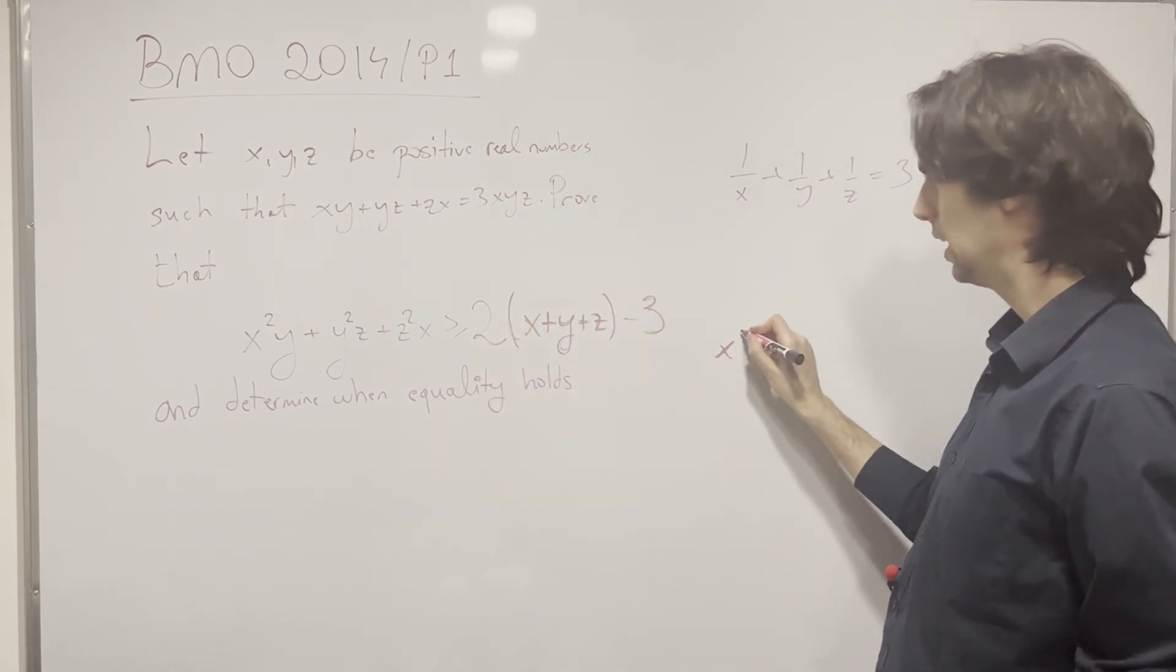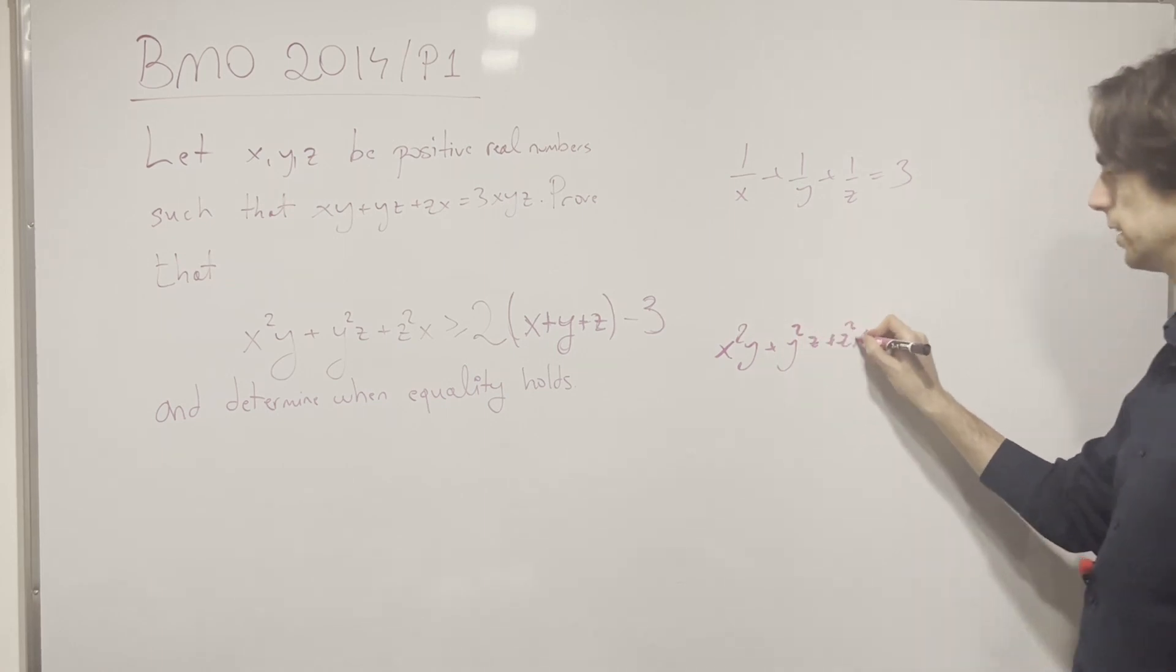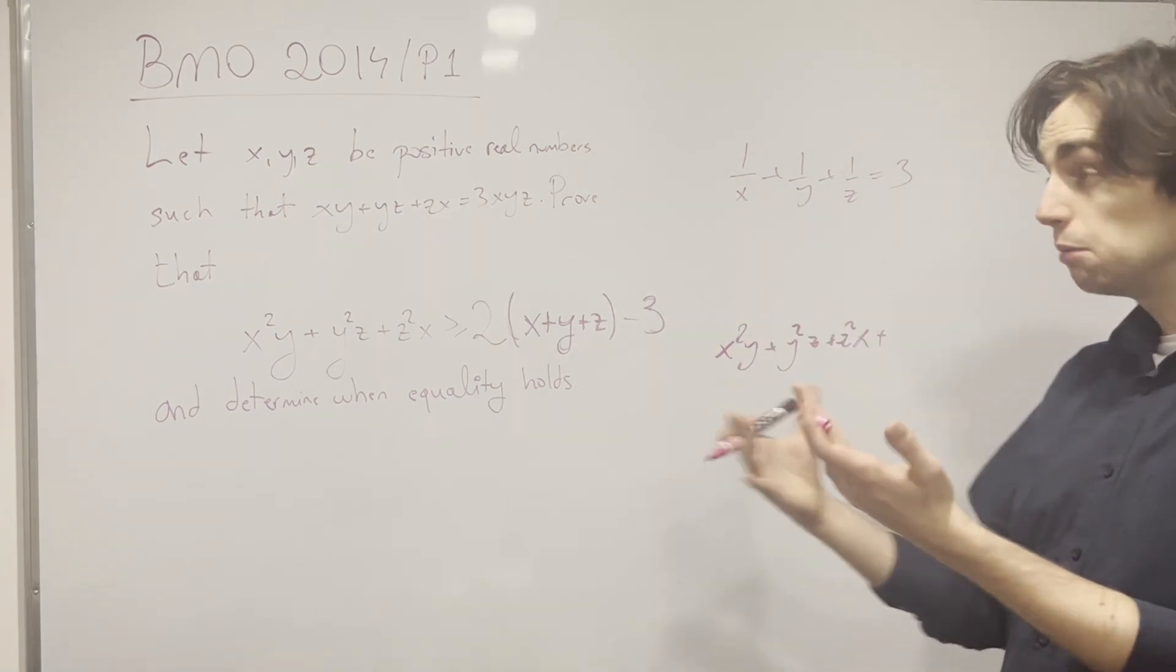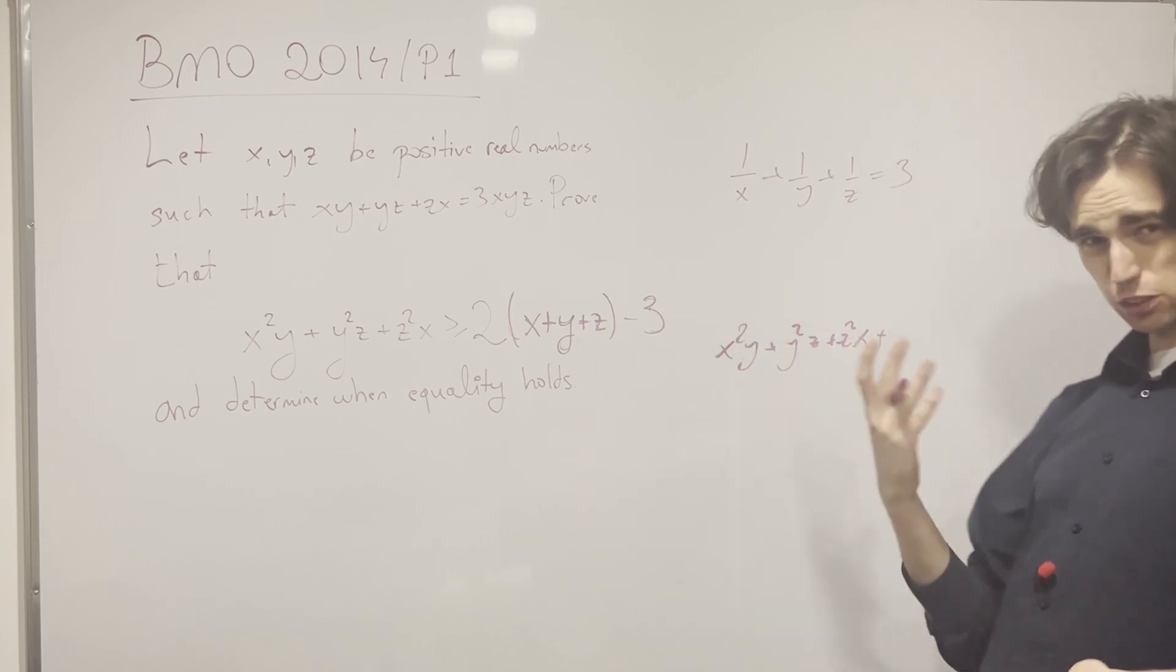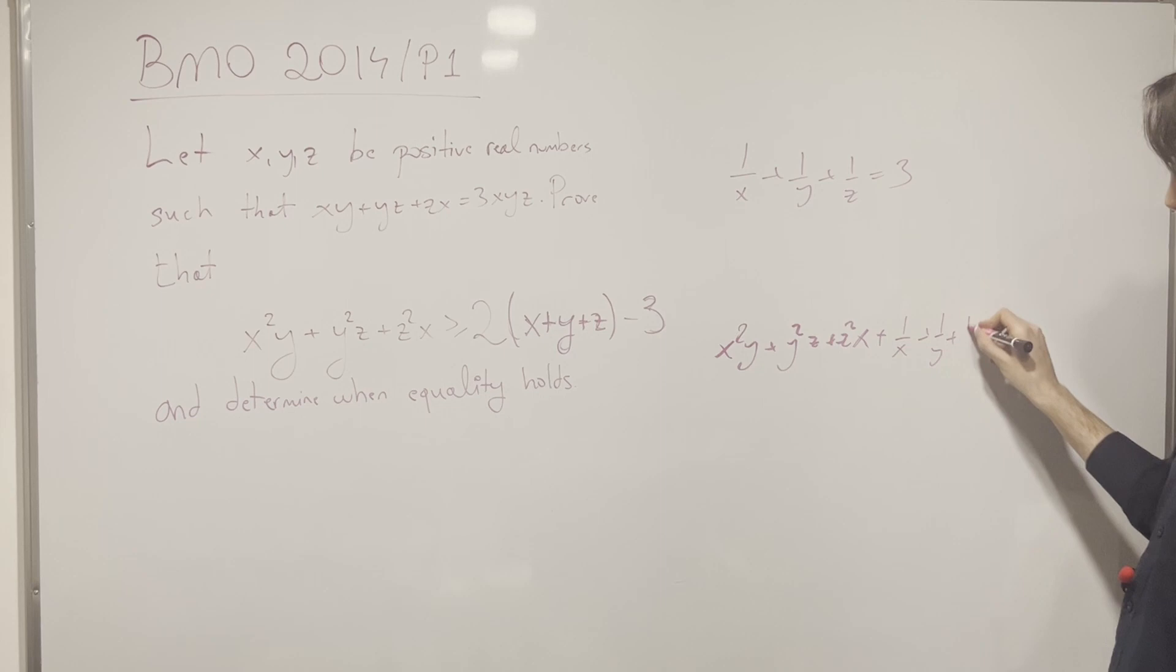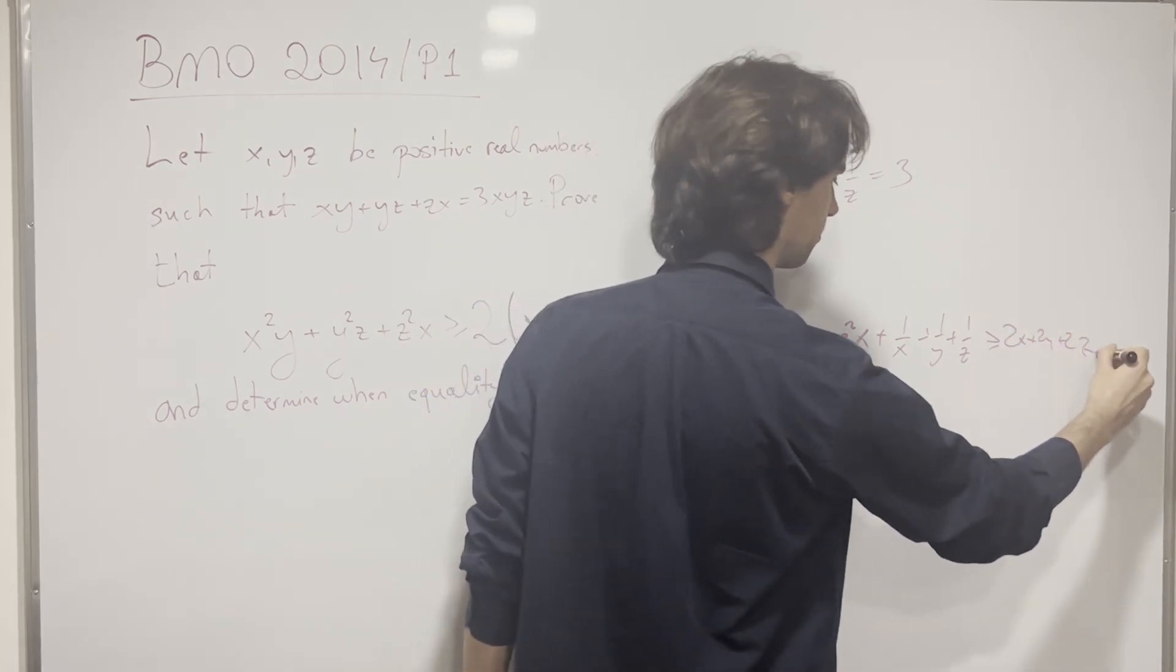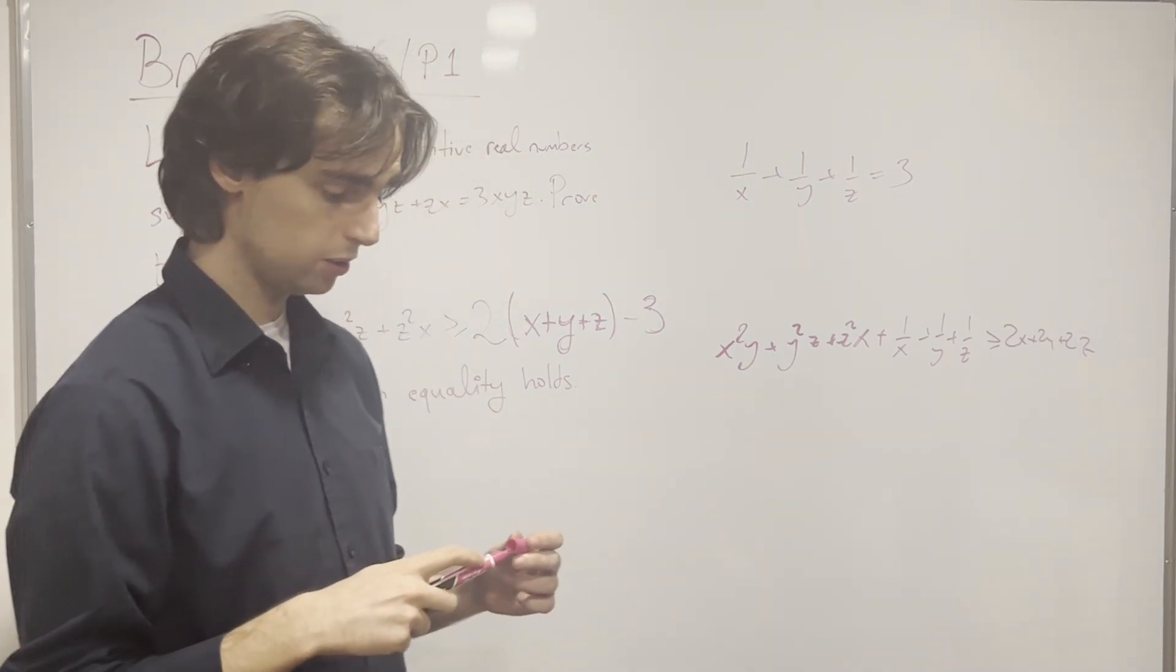x squared y plus y squared z plus z squared x plus, instead of 3, I'll write 1/x plus 1/y plus 1/z, because this I may be able to use in some AM-GM type of situation. That's literally my thinking, I have 2x, 2y, 2z. Maybe there's a way to combine them, to combine them in pairs, plus 1/y plus 1/z. Now my question for you is, we need to prove this is greater than or equal to 2x plus 2y plus 2z. Now is there any sort of way that you could think about combining these to get that.